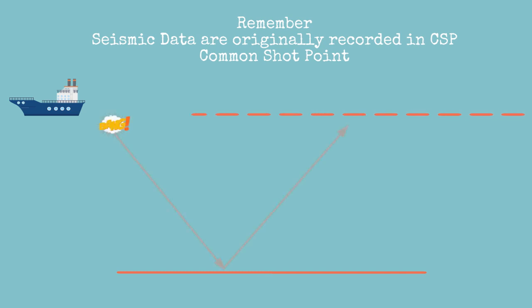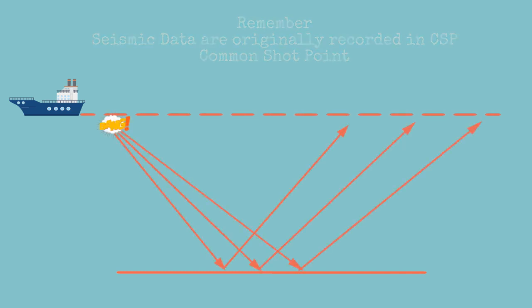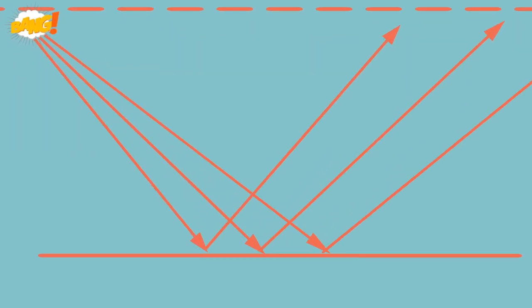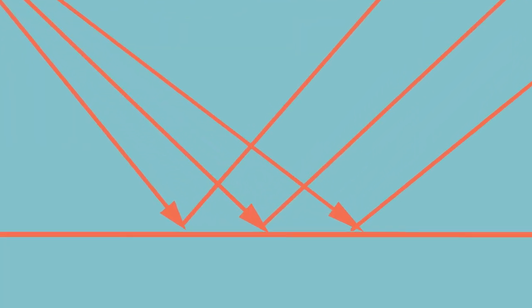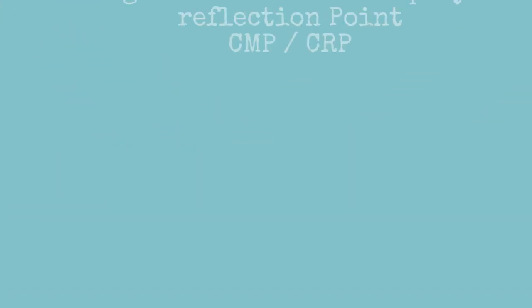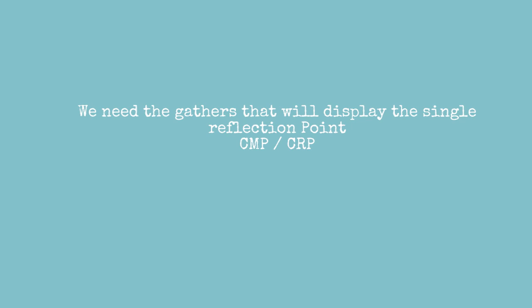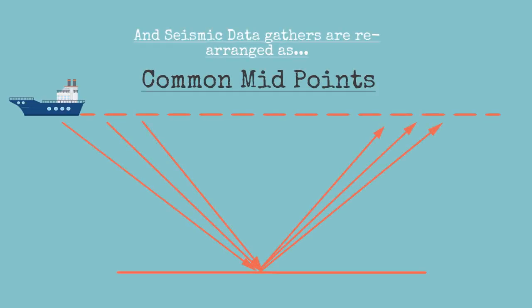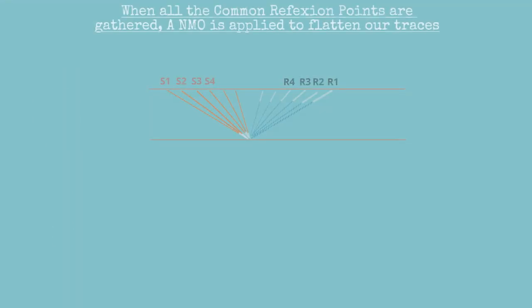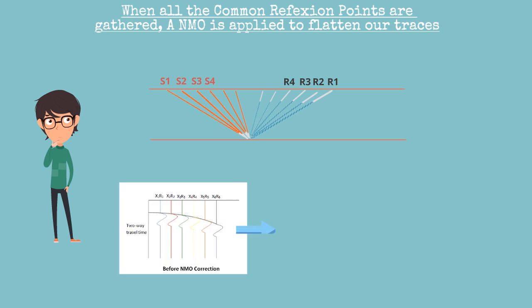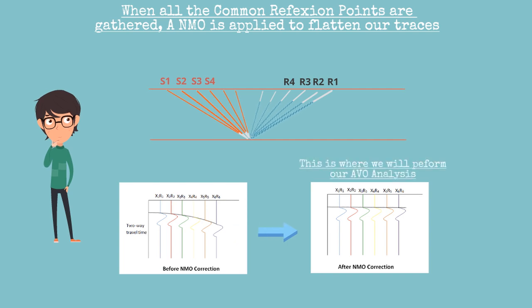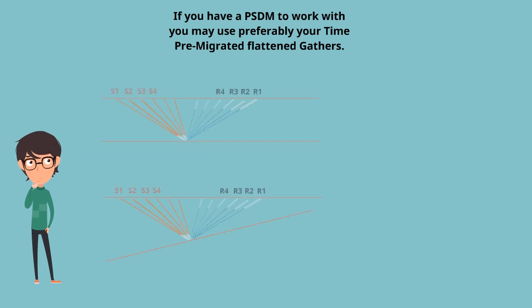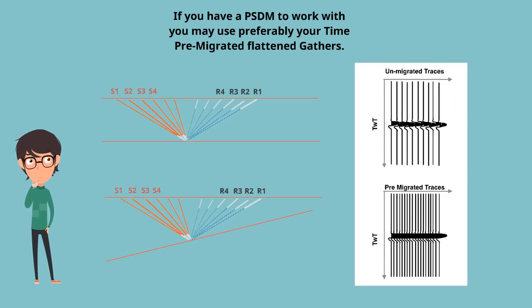Seismic data are recorded as shot gathers, meaning all offset traces related to a single shot are gathered. However, the shot gather is not suitable for an AVO analysis because the traces are coming from a unique reflection point. The gathers we need to work with are the common midpoints, or CMP. When rearranged as CMP, we have the gathers on which we may perform the AVO analysis. For a simple tabular earth model, the CMP gathers may be approximated as common reflection points, though they are an approximation and may not be suitable in cases of anisotropy or dipping events.